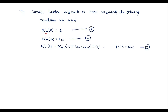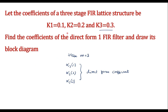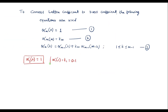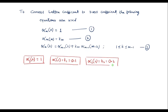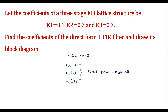Since m = 3, we write alpha_3(0) = 1. From equation 2, alpha_1(1) = k1 = 0.1. Similarly, alpha_2(2) = k2 = 0.2, and alpha_3(3) = k3 = 0.3.